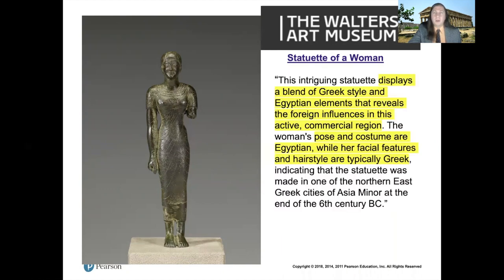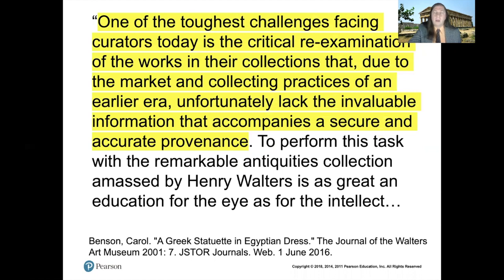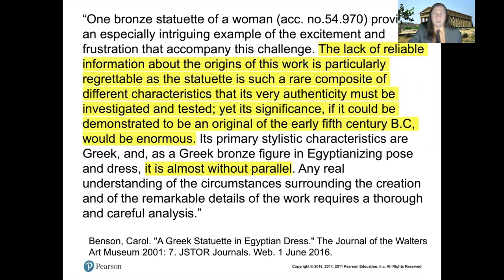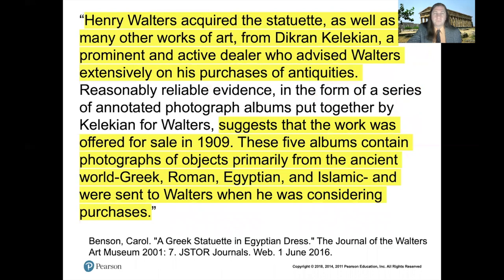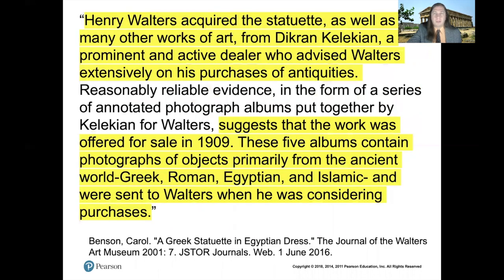The Peplos Kore is another female figure, more naturalistic than previous examples with remnants of polychrome, but still very stiff and block-like. There's a similar statuette of a woman at the Walters — very tiny, made of bronze — which is interesting because it's clearly a Greek figure based on the hairstyle and facial expression, but she's wearing Egyptian clothing. This was probably made in a Greek trading colony in Egypt. It has no provenance, so it's a little dubious — it was bought from art dealer Dikran Kelekian, who sold a lot of material to Henry Walters.